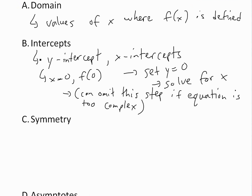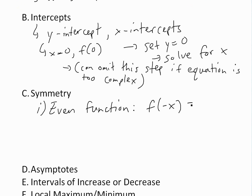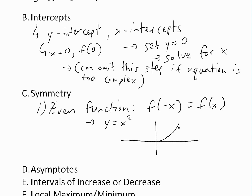Part C of the guidelines looks at symmetry, which will make things a lot easier to graph. There are three kinds. If you have an even function, where f of negative x equals f of x — for example, y equals x squared — it's going to be the same whether you put negative x or positive x in. If you were to graph it, you'd have the same thing on the left and right side. This is an even function, symmetric about the y-axis.